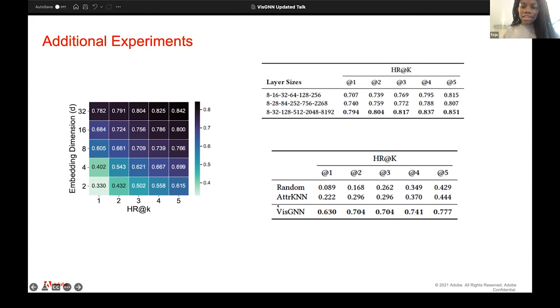And then in this last table, instead of looking at the personalized visualization recommendation, we looked at the personalized attribute recommendation. And we used the attribute K neural network algorithm and we just used random to compare. And so random is just randomly picking from the hat what you get. And in this instance, the VizGNN performed better for the more specific task of personalized attribute recommendation as well.